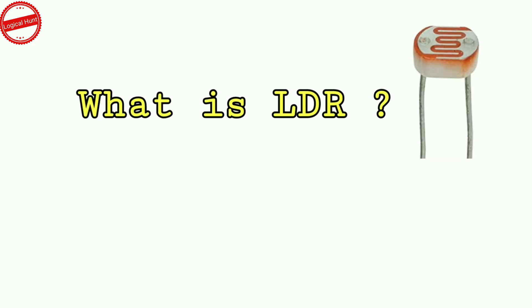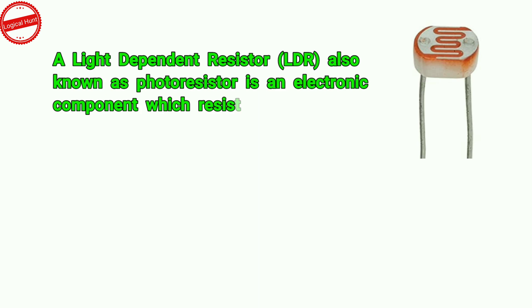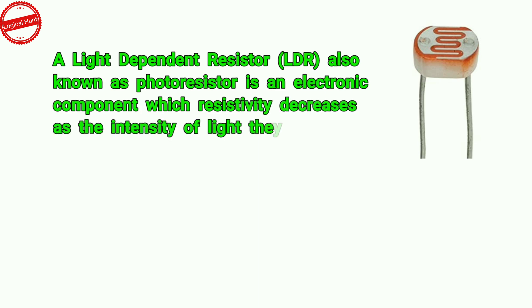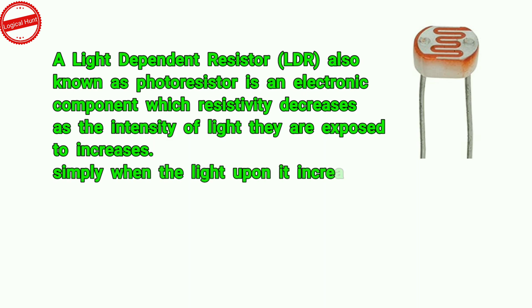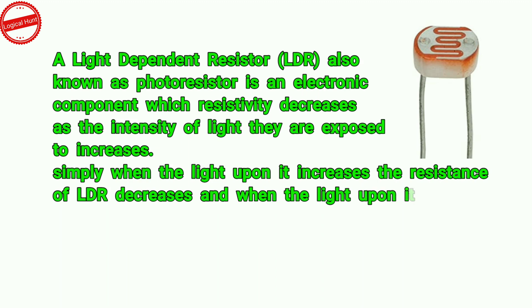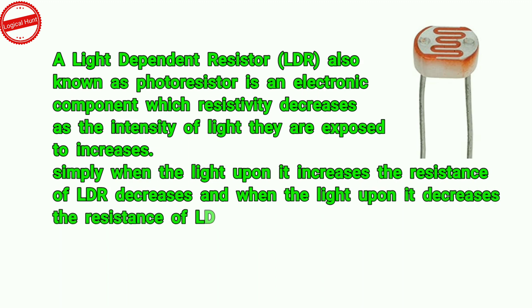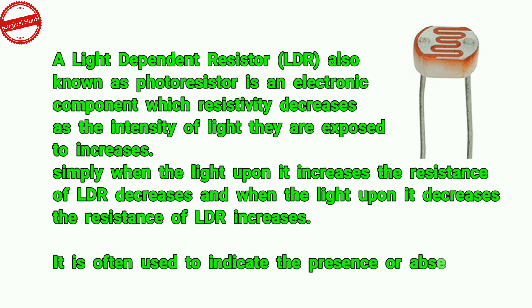What is LDR? A light-dependent resistor, also known as a photoresistor, is an electronic component whose resistivity decreases as the intensity of light it is exposed to increases. Simply, when the light upon it increases, the resistance of the LDR decreases, and when the light upon it decreases, the resistance of the LDR increases. It is often used to indicate the presence or absence of light, or to measure the light intensity.